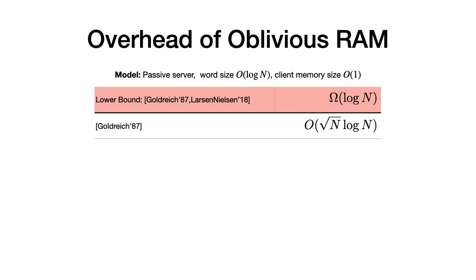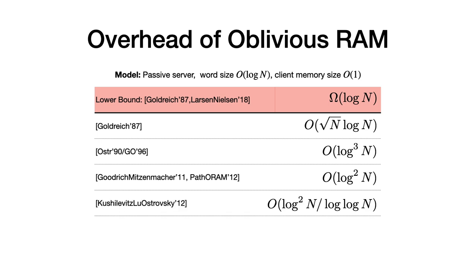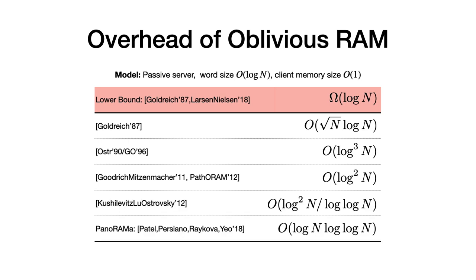The starting point is the work of Goldreich showing a square root ORAM. The last work in this line is the beautiful work of Patel et al. from two years ago, showing a construction called Panorama. Panorama came very, very close to matching the lower bound — they show a construction of order log n · log log n, just a log log n gap between the upper bound and the lower bound.